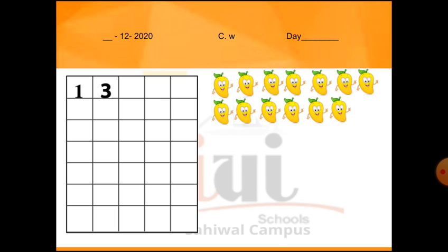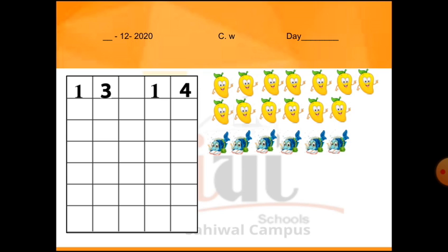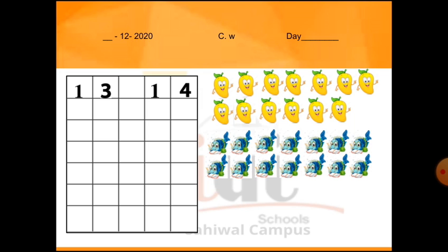Ab hum next number write karenge. Next number kya hai — one, four, fourteen. Fourteen bhi aapne aise hi boxes mein write karna hai. Box se bahar aapka word nahi aayega, aapne box ke andar andar write karna hai. Theek hai, video ko pause karein aur one, four — fourteen apni copy pe write karein. Sab ne write kar liya. Ab hum fourteen fish count karenge: one, two, three, four, five, six, seven, eight, nine, ten, eleven, twelve, thirteen, fourteen. Okay students, aap sabne ab fourteen fish count kar li hai mere saath. Theek hai.